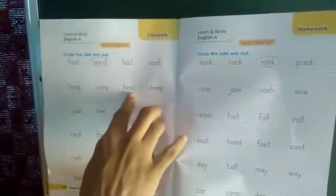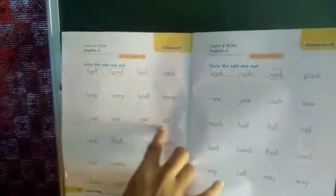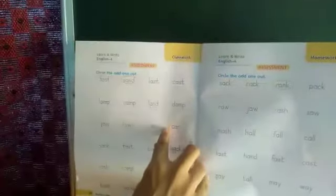In page number 24, circle the odd one out. Fast, sand, last, cast - sand is odd one, so circle the sand. Land, camp, hand, dam - land is odd one, so circle the land. Jaw, law, raw, car - car is odd one, circle the car.